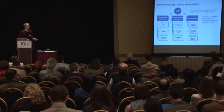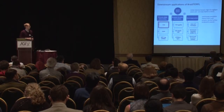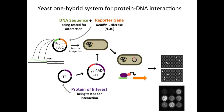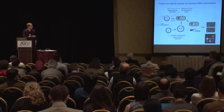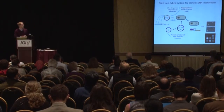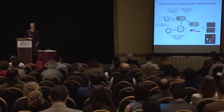Now I have some functional data to show you, and we're very excited about this. Our primary application of the library as it stands right now is yeast one-hybrid screens to identify interesting candidates for protein-DNA interactions. The DNA sequence of interest is in control of a reporter gene — in our case, renilla luciferase. This reporter construct is integrated into yeast to create reporter strains. The transcription factor being tested is expressed fused to a GAL4 activation domain, so when this transcription factor interacts with our DNA sequence of interest, we initiate transcription of luciferase, which we can quantify in a plate reader.